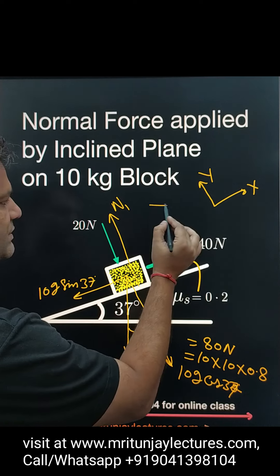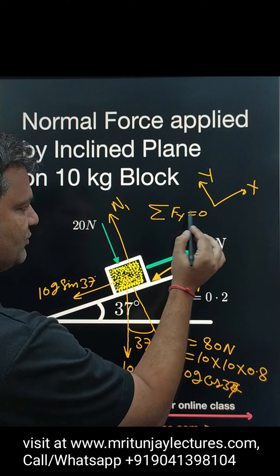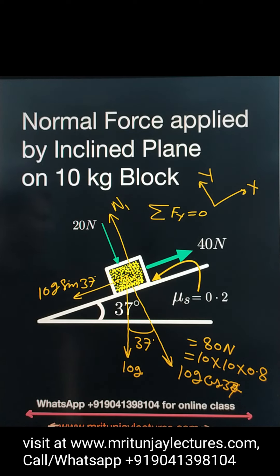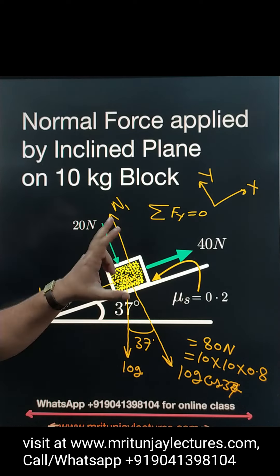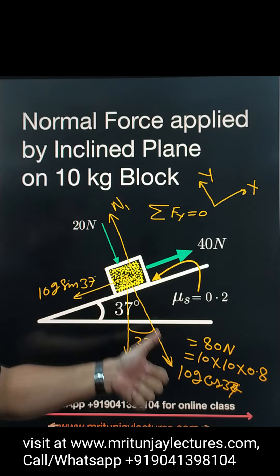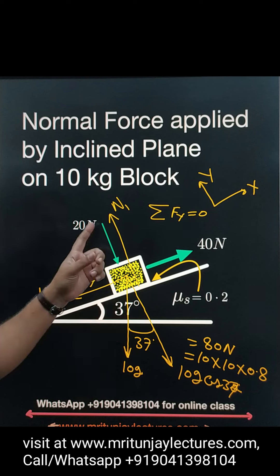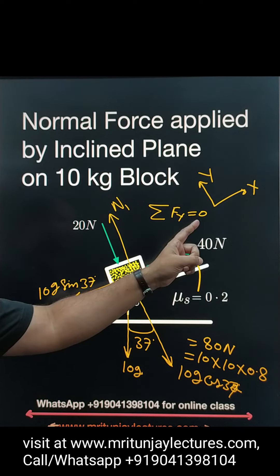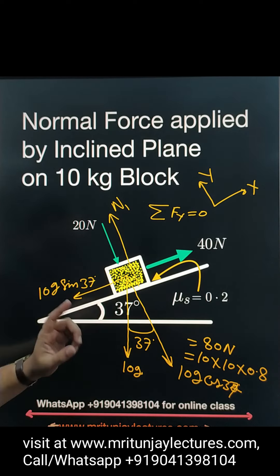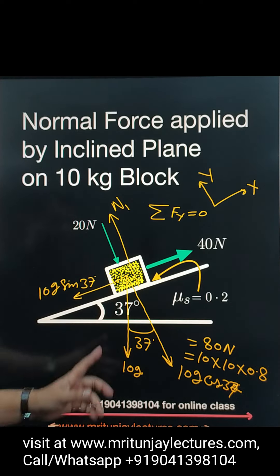Now, net force in Y, capital Y direction is 0. If we assume net force on Y direction is 0, means this block is not moving along capital Y axis. Only possible if N1 is positive. After solving, if we got N1 is positive, it means this statement is right. If N1 is negative, then that statement is wrong. Look here very carefully.